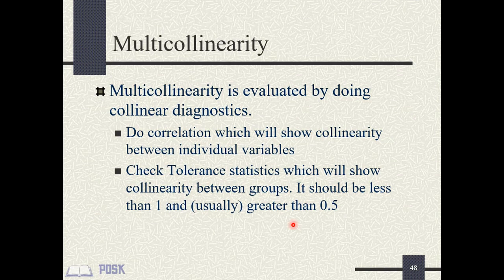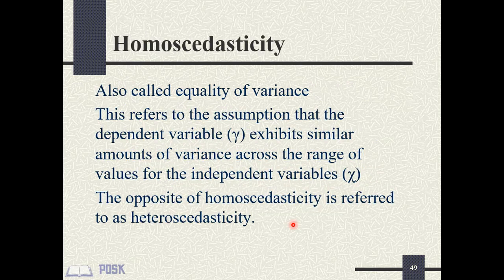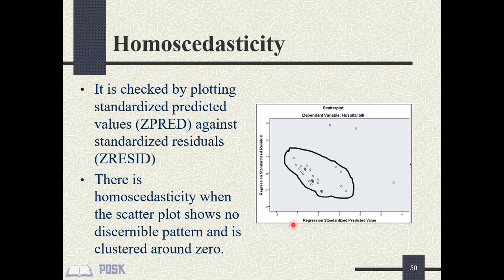Multi-collinearity is evaluated by collinearity diagnostics, including running a correlation matrix between independent variables, tolerance, and variance inflation factor. The next regression term is homoscedasticity — having the same scatter — which is an assumption of regression. The opposite is heteroscedasticity, meaning different scatter. Heteroscedasticity is a problem in regression because it tends to produce p-values that are smaller than they should be. In the SPSS output shown, the scatter of the graph is clustered around 0 with no discernible pattern, demonstrating homoscedasticity.